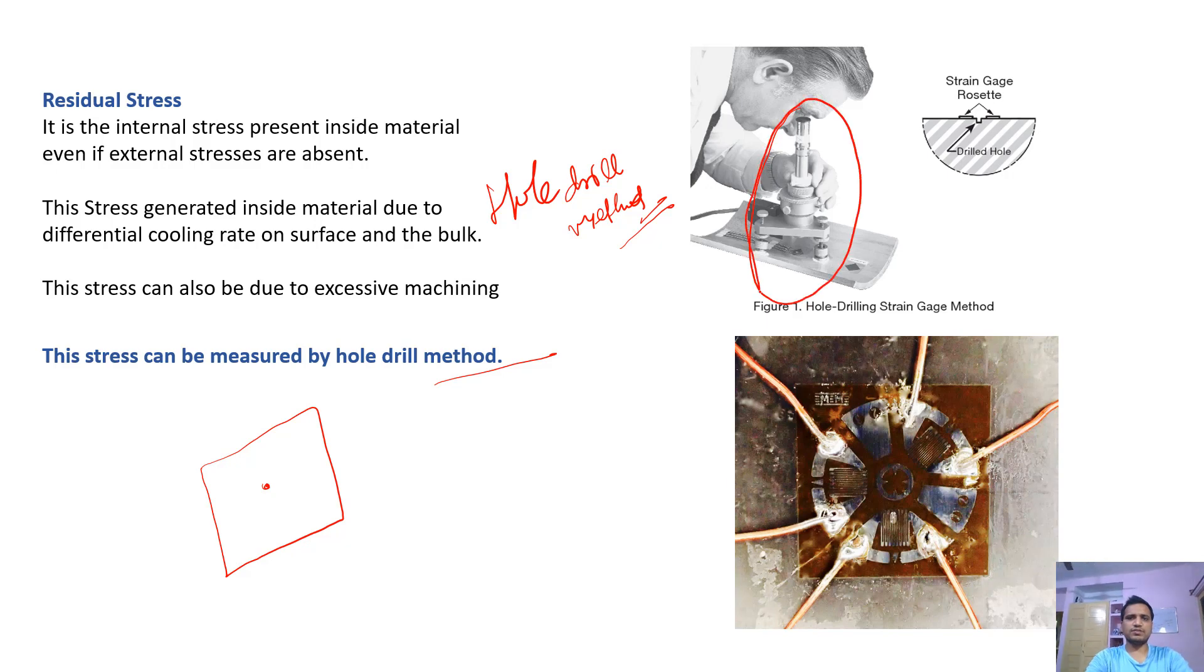Here you can see this is a tripod-like structure. This is the base where we fix the complete setup. This is a gauge to control depth, through which we control up to what depth we need to drill it. This is a long cylinder where a driller is set, a driller of say suppose 1mm diameter is set over here.